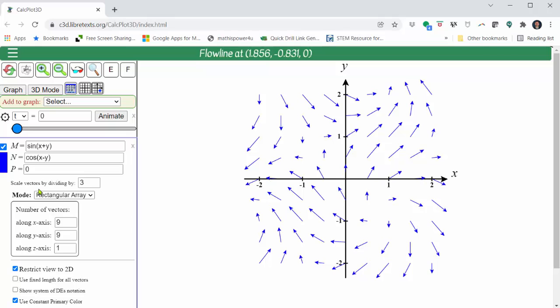So you may have to play with the scaling, as well as the number of vectors along the x and y axes to get the graph you desire. And again, here we have the flow line from a particular point. I hope you found this helpful.